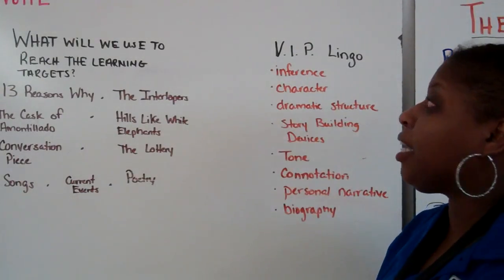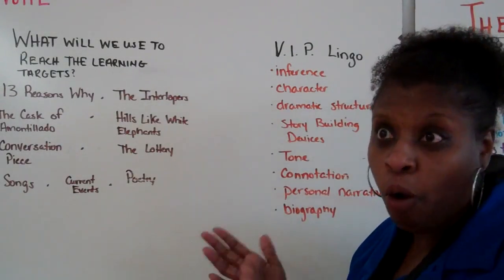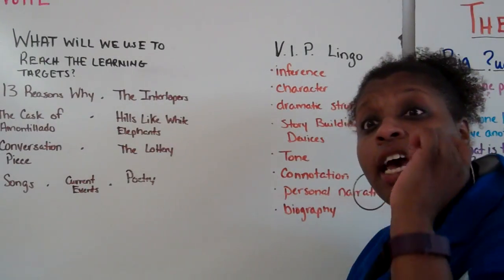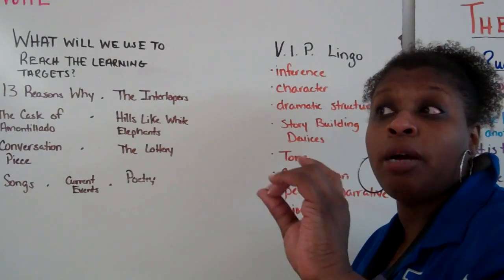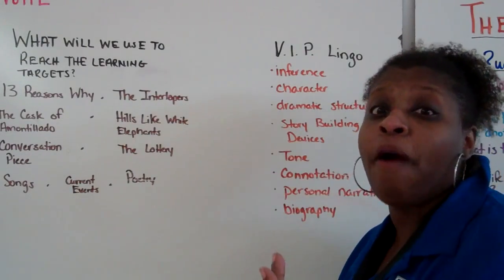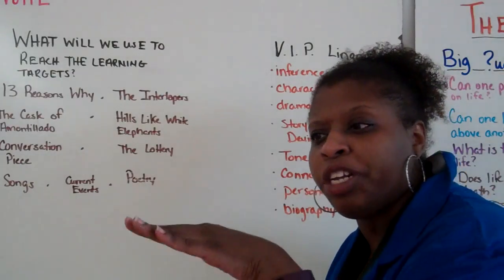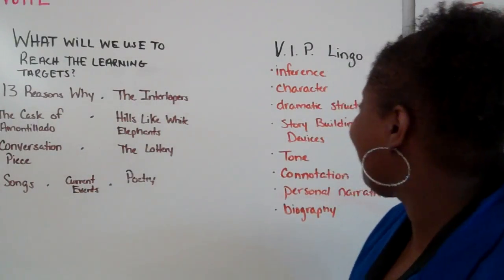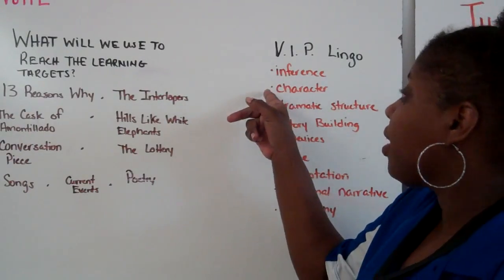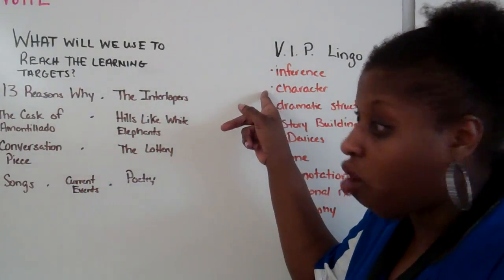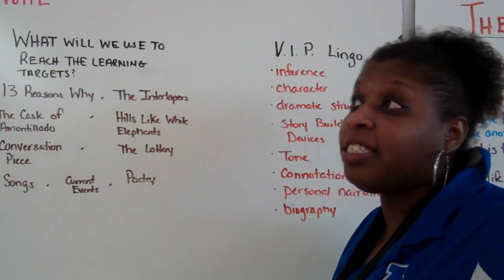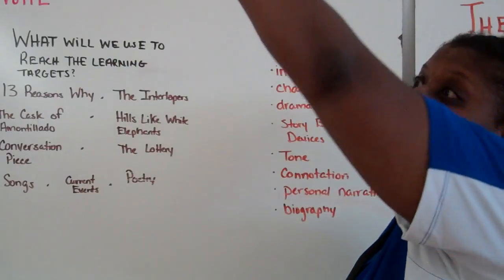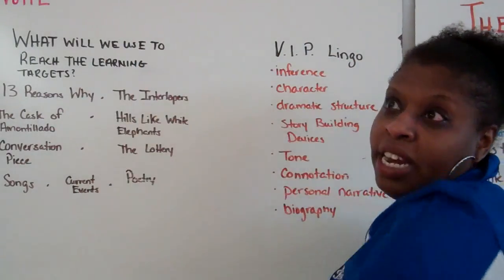Some VIP lingo — VIP stands for very important. Inference: as I already stated, it's the assumption you make based on your prior knowledge and the information you gather from the text. It's reading between the lines — detectives do it every single day. Dramatic structure: that is the stages of plot. You may have heard it called the roller coaster or climbing the mountain and going down the mountain.